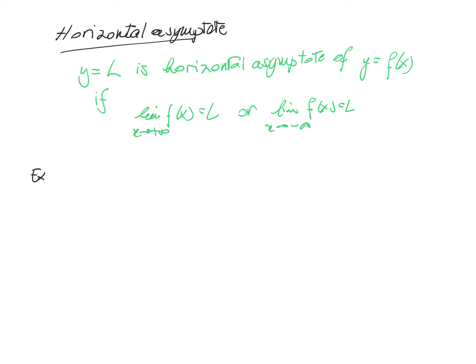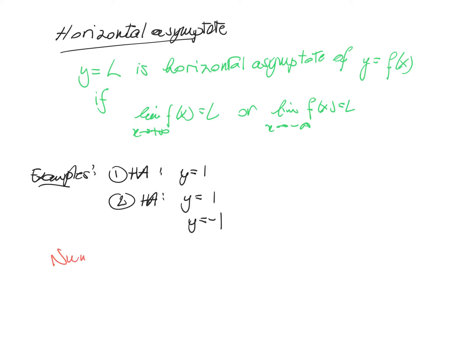So for the previous examples, in the first example, we have one horizontal asymptote: the line y equal to 1. If you look at the second example, the one where we had minus 1 if we go to minus infinity and plus 1 if we go to plus infinity, there you have two horizontal asymptotes: y is 1 and y is equal to minus 1. For a horizontal asymptote, you can have at most two horizontal asymptotes.